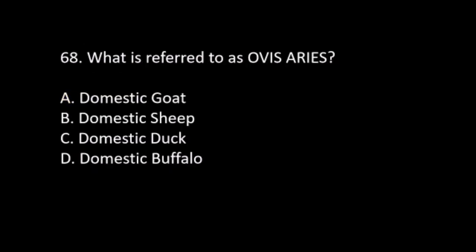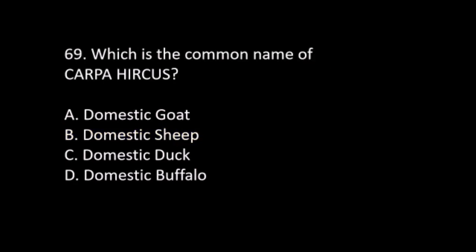Number 68. What is referred to as Ovis aries? A. Domestic goat. B. Domestic sheep. C. Domestic duck. D. Domestic buffalo. Number 69. Which is the common name of Capra hircus? A. Domestic goat. B. Domestic sheep. C. Domestic duck. D. Domestic buffalo. The answer is A. Domestic goat.